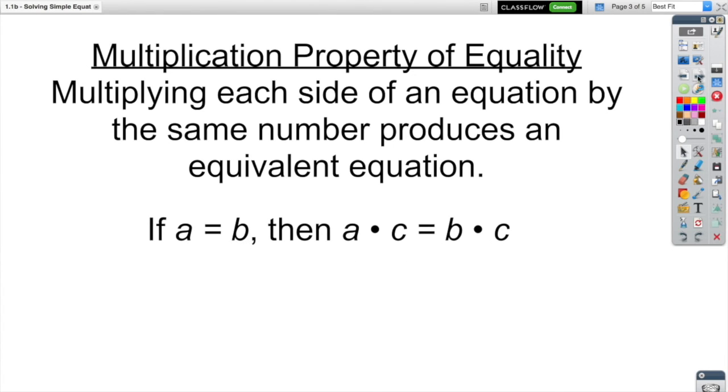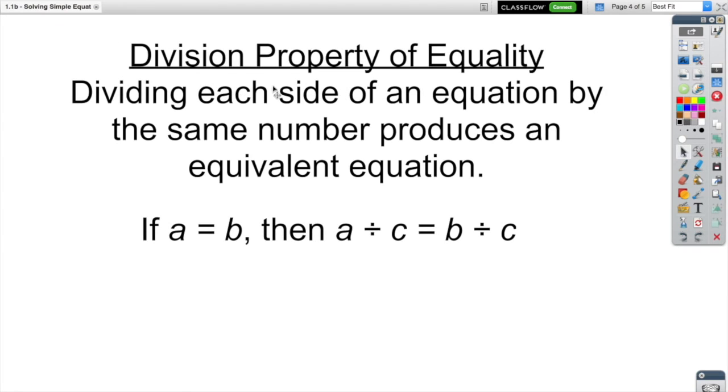Now the same thing goes for the examples we just did. We were using the division property of equality. That dividing each side of an equation by the same number produces an equivalent equation. So if A equals B was my original equation, then if I divide the left side by some number C, as long as I do the same division on the other side, my equation is still equivalent. And so these are the properties we're going to use today.